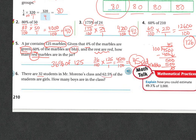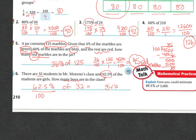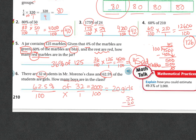There are 32 students in Mr. Monroe's class. 62.5% of the students are girls. How many boys are in the class? Let's find out how many of those 32 are girls first. So 62.5% of 32 students: 62.5 times 32 gives 2,000 over 100, and 100 goes into 2,000 twenty times. So there were 20 girls. 32 students minus 20 girls equals 12 boys. 20 girls plus 12 boys equals 32 students total.